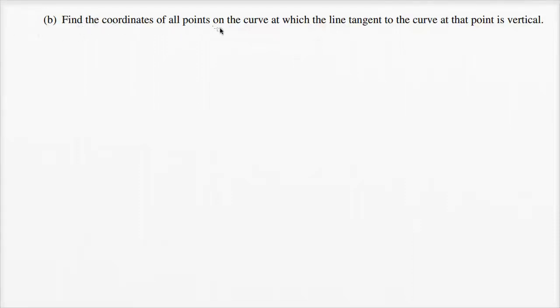Find the coordinates of all points on the curve at which the line tangent to the curve at that point is vertical. So we want to figure out the points on that curve where the tangent line is vertical.